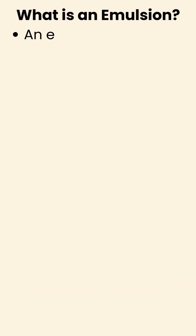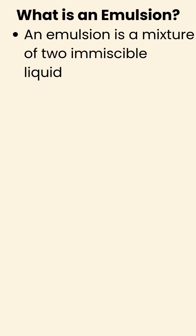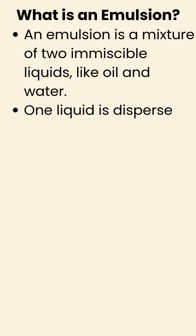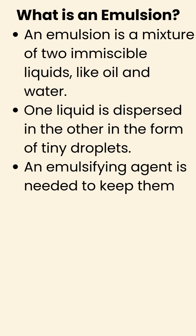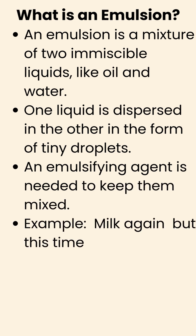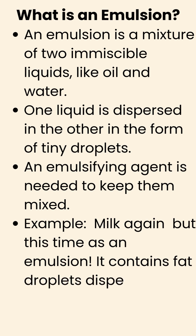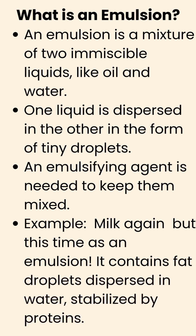What is an emulsion? An emulsion is a mixture of two immiscible liquids, like oil and water. One liquid is dispersed in the other in the form of tiny droplets, and an emulsifying agent is needed to keep them mixed. For example, milk is an emulsion — it contains fat droplets dispersed in water, stabilized by proteins.